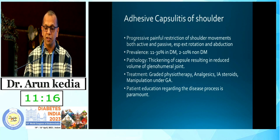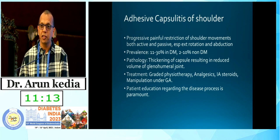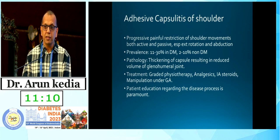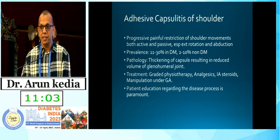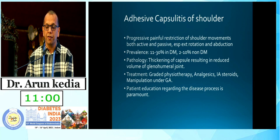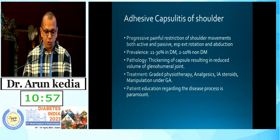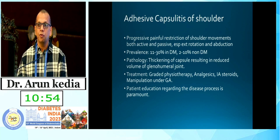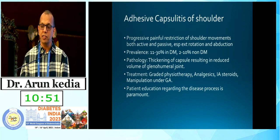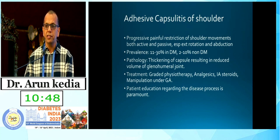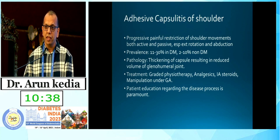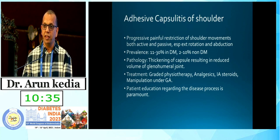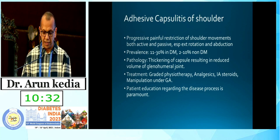The pathology of frozen shoulder is thickening of the capsule resulting in reduced volume of the glenohumeral joint. Treatment is simple once you identify it: graded physiotherapy, intra-articular steroid injections, sometimes intra-articular distilled water to increase joint volume, and in severe cases manipulation under general anesthesia. What is most important is patient education, because most patients don't self-report shoulder pain — they assume it is trivial. And even in clinic, we often don't pay attention to shoulder pain.